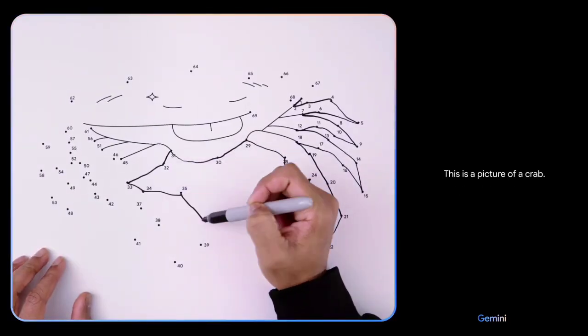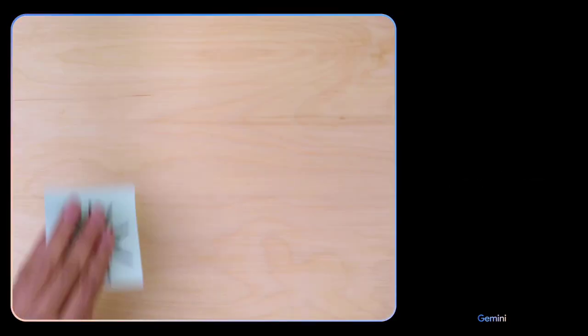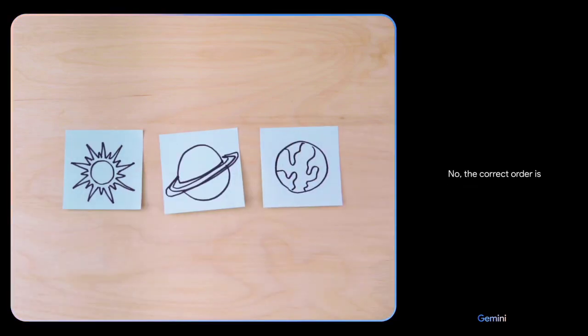This is a picture of a crab. That's right. Is this the right order? No. The correct order is Sun, Earth, Saturn.